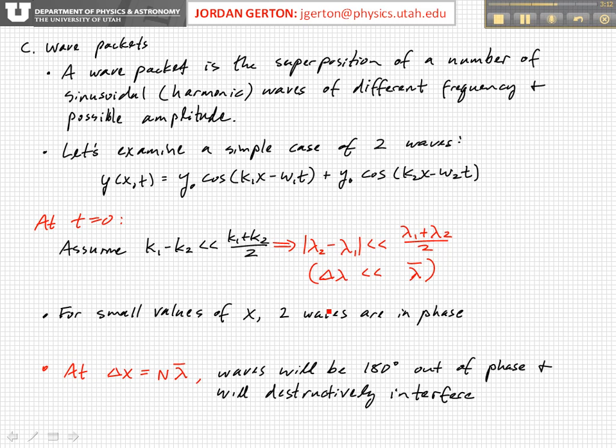Then for small values of x, the two waves remain in phase, but gradually they come out of phase because they have different wavelengths, different frequencies, and at some distance, delta x, equal to some number times the average wavelength, the waves will be out of phase by pi, and they'll destructively interfere.